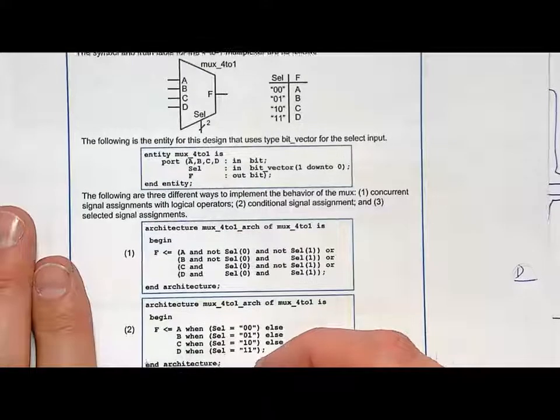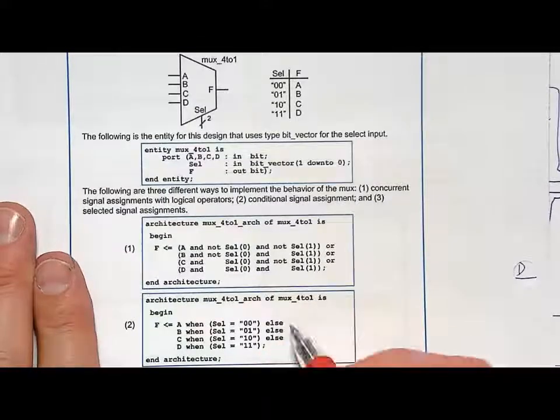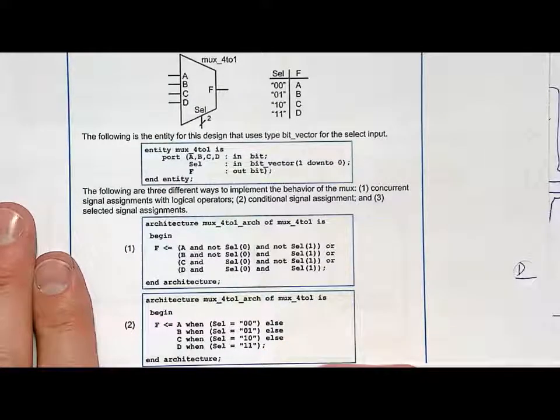Look how much easier this is. In this situation, here's a new architecture where you simply do a conditional signal assignment. You simply assign to F: A when select is 00, else B when select is 01, else C when select is 10, else D.